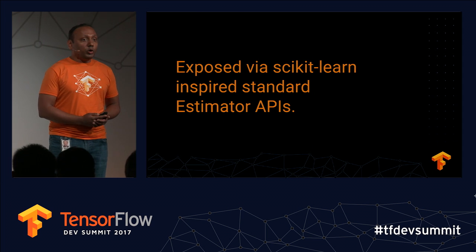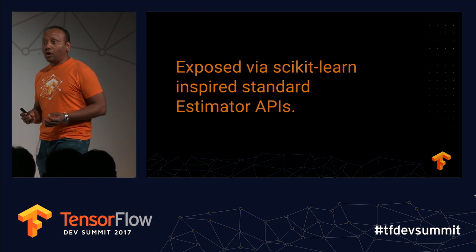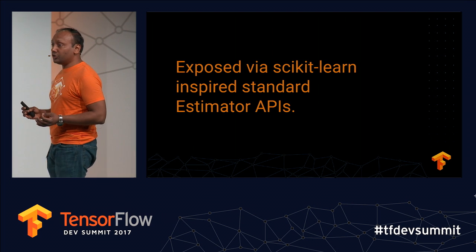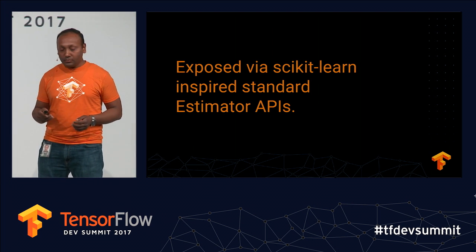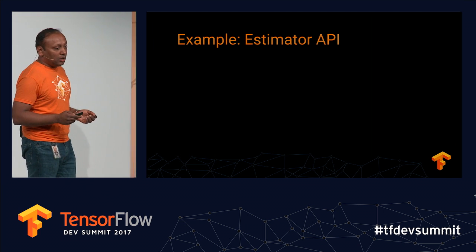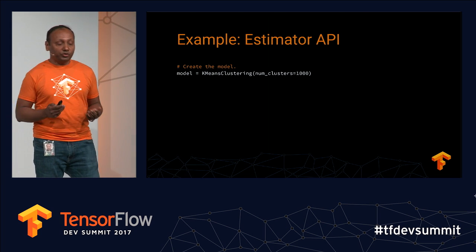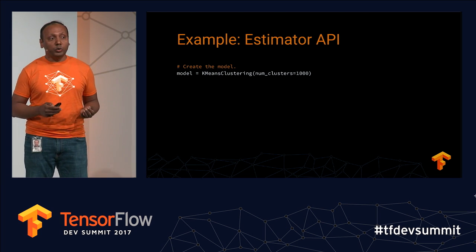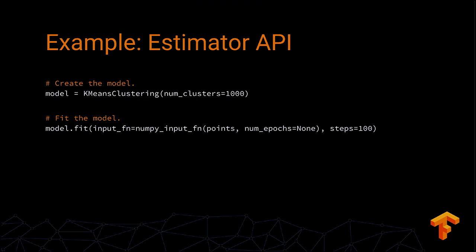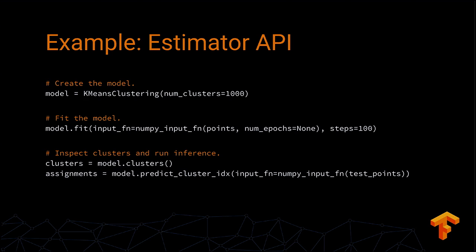Now we want to make it really easy for users to use these algorithms. All of them are exposed by a very high-level, scikit-learn-inspired estimator API. Here's an example for k-means clustering: you start by creating a k-means clustering object, passing in options like the number of clusters, how you want to train, and how you want to initialize. Next, you call the fit function and pass it your input — that's it. TensorFlow goes behind the scenes, creates a graph, runs training iterations, and configures the runtime. When training is done, you can inspect model parameters like the clusters and run inference to find cluster assignments.